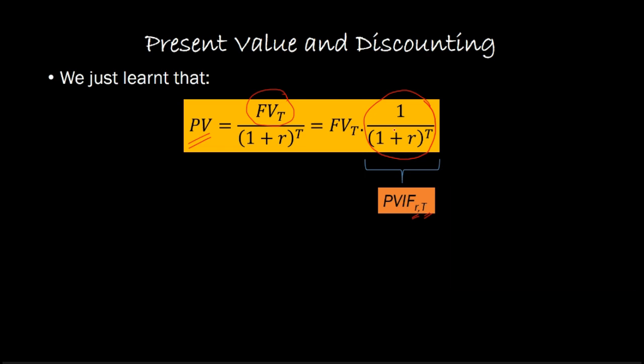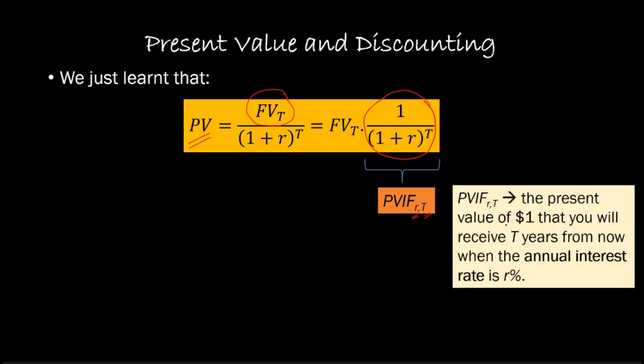The question is, what is this expression capturing? Well, this really represents the present value of $1 that we are receiving T years from today when our discount rate is r percent.